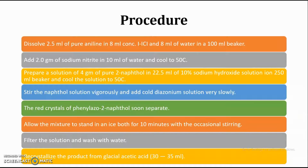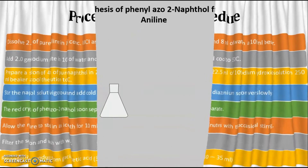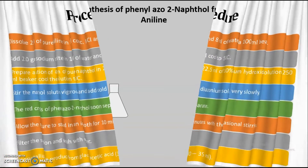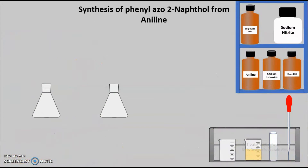I request you to write down this procedure required for the synthesis of phenyl azo-2-naphthol, so that when we actually perform the practical, we understand the different steps involved. Let's begin with our practical session. If we were present in the lab, here is how we are going to perform this practical with the help of this virtual lab. From here, you can see we have placed the chemicals required: aniline, concentrated HCl, water, sodium nitrite, and sodium hydroxide.